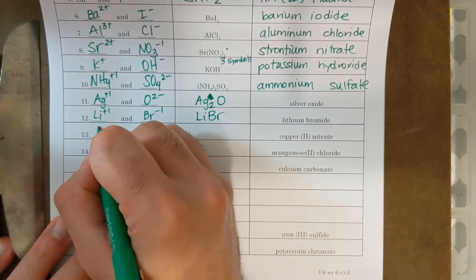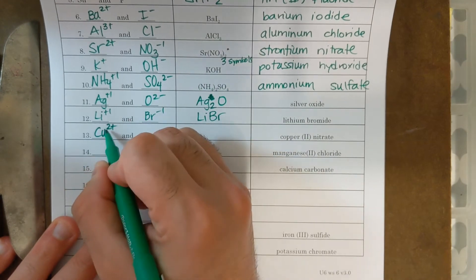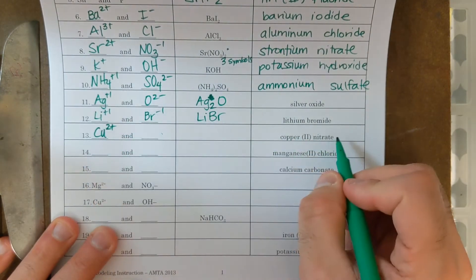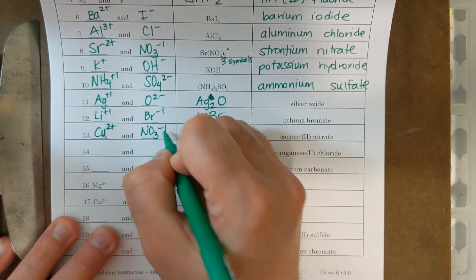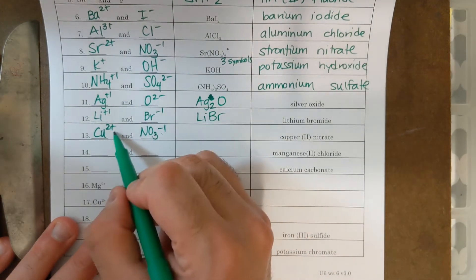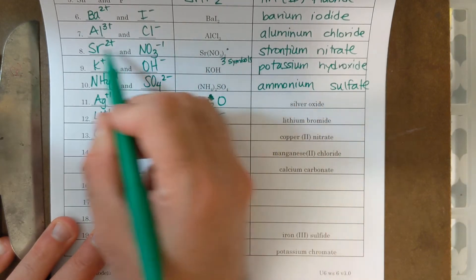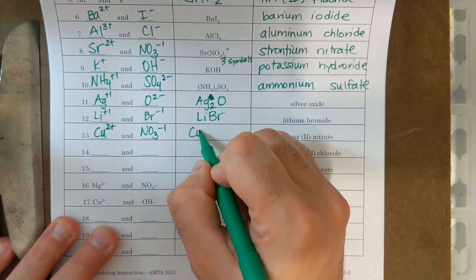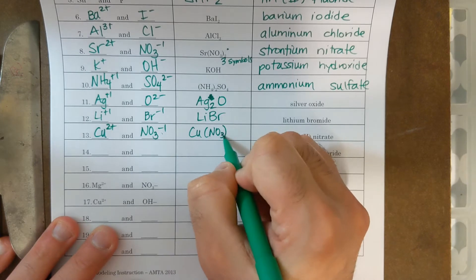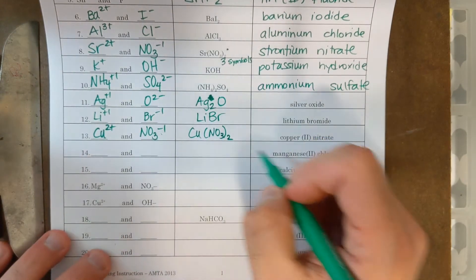Copper two nitrate, copper two means its charge is positive two. Nitrate is NO3 minus one. If I do the crisscross method, I'm going to need two nitrates for one copper. It looks similar to number eight, so I'm going to need Cu parenthesis NO3, two. I need two nitrates for that one copper.